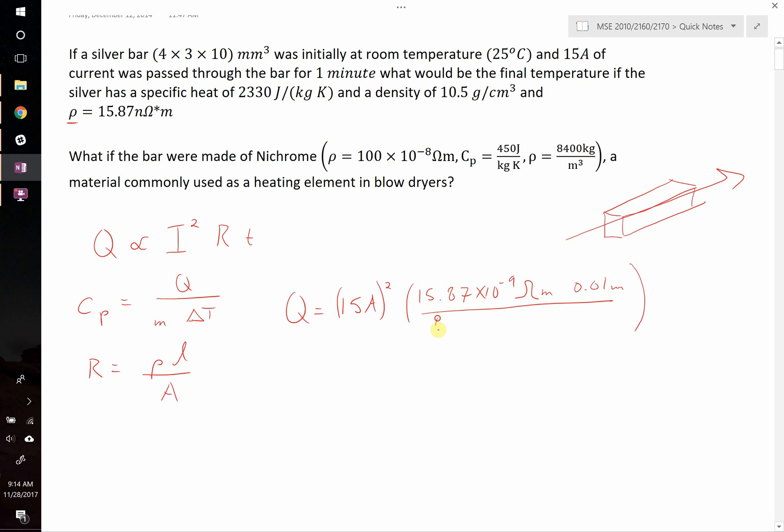Divided by the cross sectional area, which is 4 millimeters by 3 millimeters, so 0.004 meters by 0.003 meters. And then we multiply this by time. It's one minute. Let's go ahead and put that in seconds, 60 seconds.